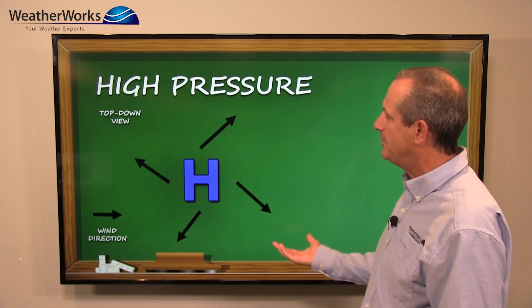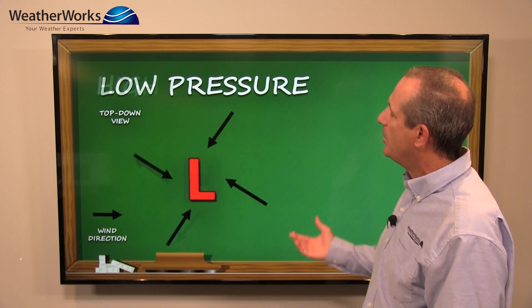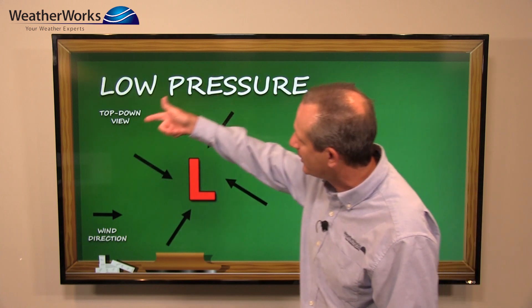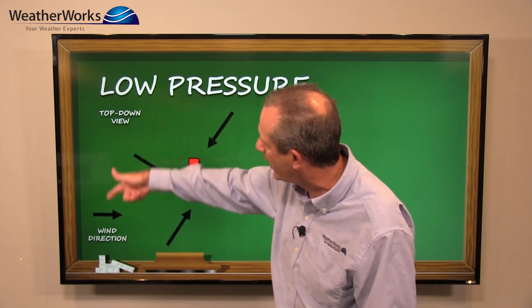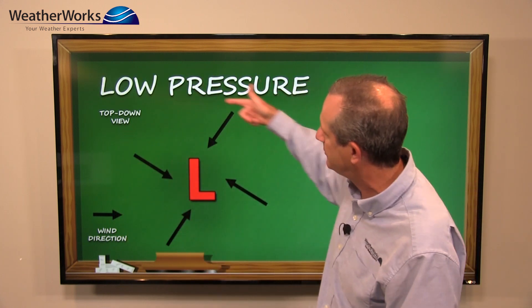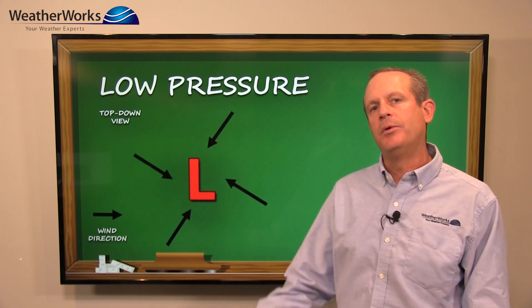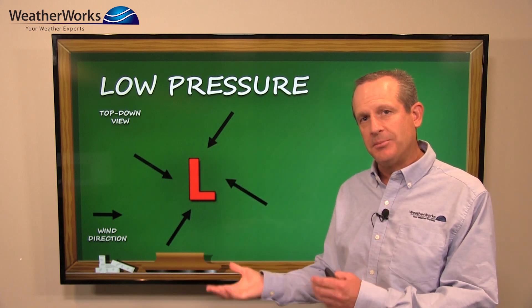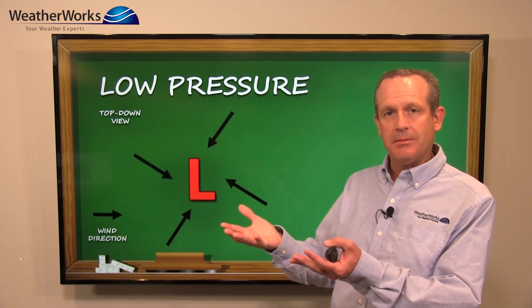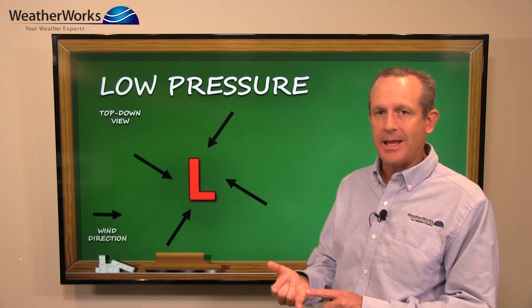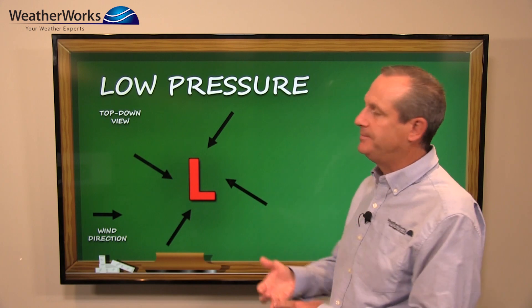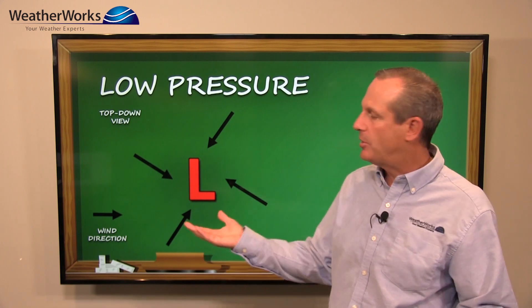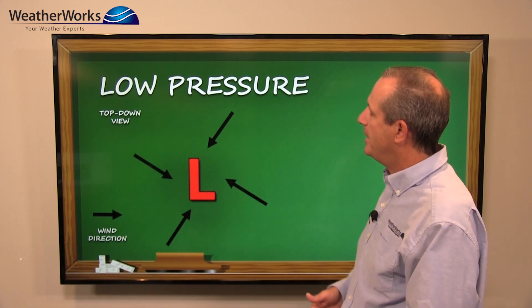Now the opposite — low pressure. Winds around a low are counterclockwise, so they're moving this way in the northern hemisphere. And also with a low pressure system, you have rising motion, which lends to clouds, precipitation, rain, snow, what have you.